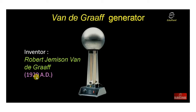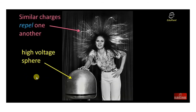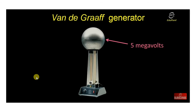Here we have a photograph of the Van de Graaff generator. It produces a high positive charge — up to five megavolts. It can generate very high voltage.